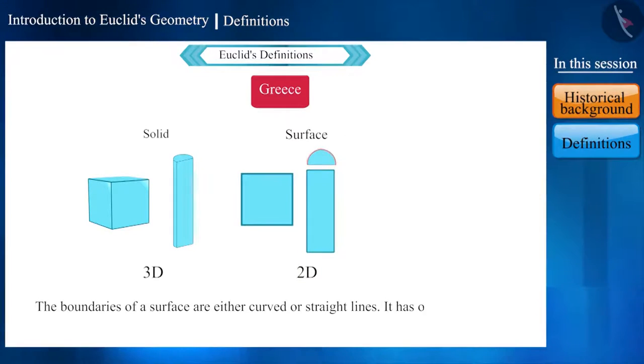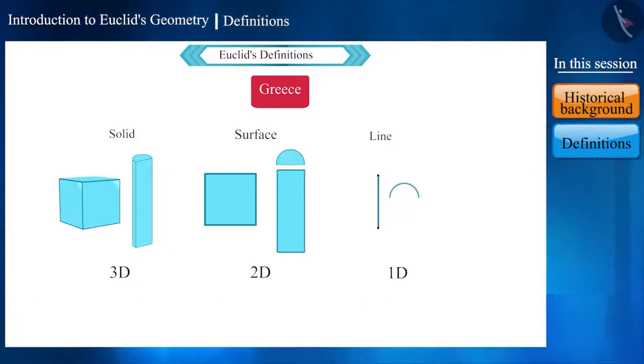And it has one dimension. That is, it is one-dimensional. The ends of these lines are points and they have no dimension.